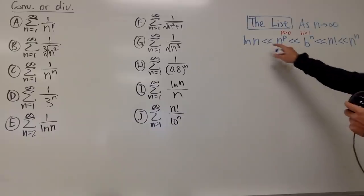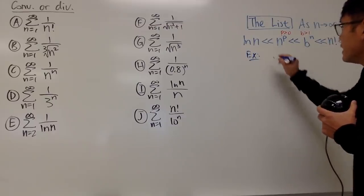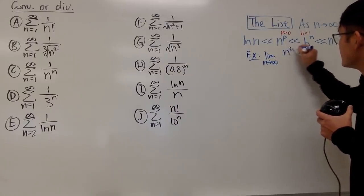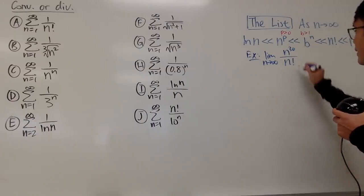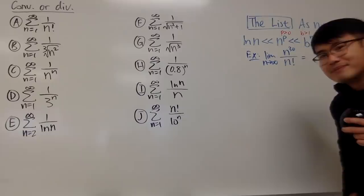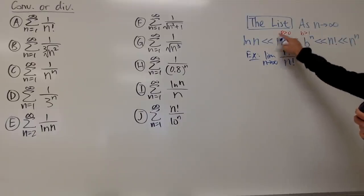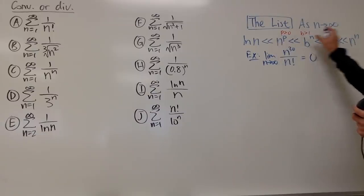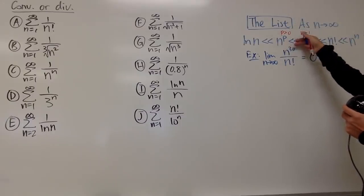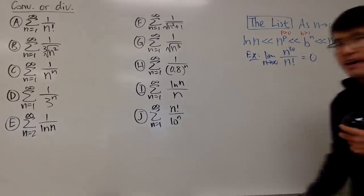The reason I put a double less-than sign is because we can use the list in the following way. For example, the limit as n goes to infinity of n to the thirtieth power over n factorial gives us 0, because n to the thirtieth power is so small compared to n factorial — when you divide them, the limit is 0. That's how we use the list.